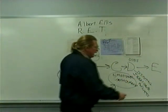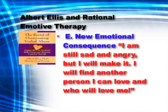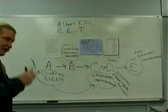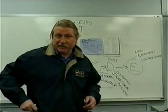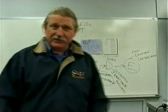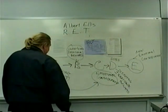The E is the new emotional consequence. Once I've disputed these irrational beliefs, I come up with a new emotional and behavioral consequence. Let me give you an example from romance. Most of you have had romances that worked and romances that failed, where you've been hurt or hurt others. So let's go through that.